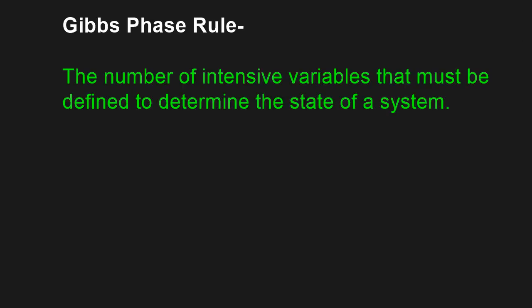The Gibbs phase rule tells us the number of intensive variables that must be defined to determine the state of a system. So what does that mean? Well, let's define some terminology here first before we go any further.